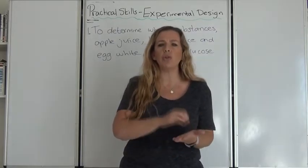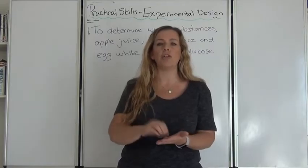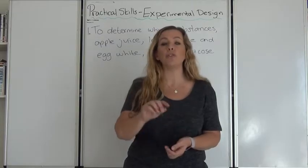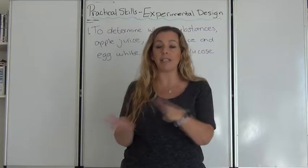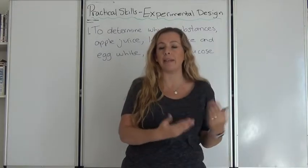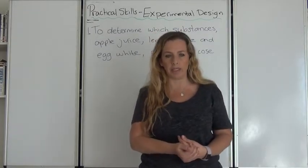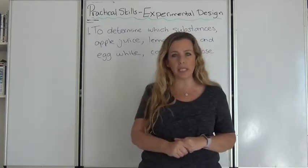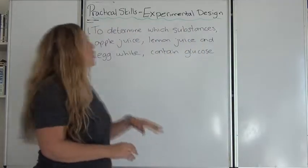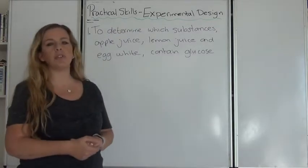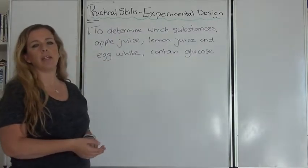You have to be so specific about absolutely everything so the other person who's performing it won't make any mistakes and then they can get the same results that you have gotten or that you expect them to get from doing this experiment. So again I'm going to stick with this and we're going to design an experiment to determine which substances apple juice, lemon juice or egg white contain glucose.